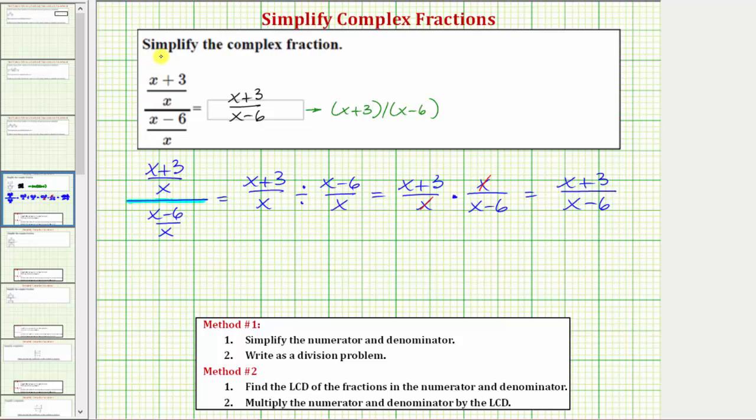Now let's also simplify this using method two. Beginning with the original complex fraction again, the second method is to find the least common denominator of the fractions in the numerator and denominator.